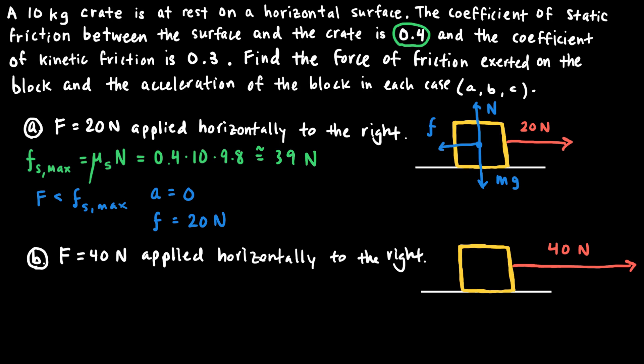Since the block isn't accelerating and isn't moving left or right, the 20 newton force to the right must be balanced by a frictional force of equal magnitude pointing to the left. So the force of friction acting on the block in Case A is 20 newtons and the acceleration is zero.